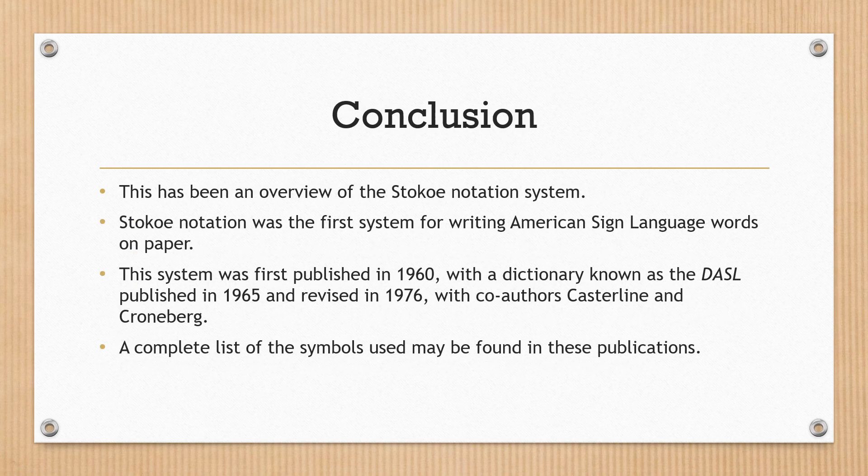Conclusion. This has been an overview of the Stokoe notation system. Stokoe notation was the first system for writing American Sign Language words on paper. This system was first published in 1960, with a dictionary known as the DASL published in 1965 and revised in 1976, with co-authors Casterline and Cronberg. A complete list of the symbols used may be found in these publications.